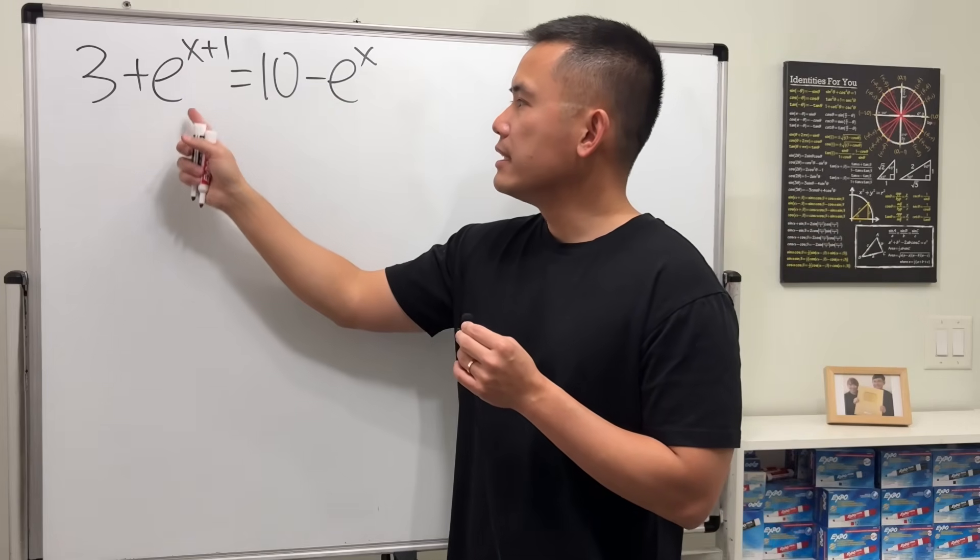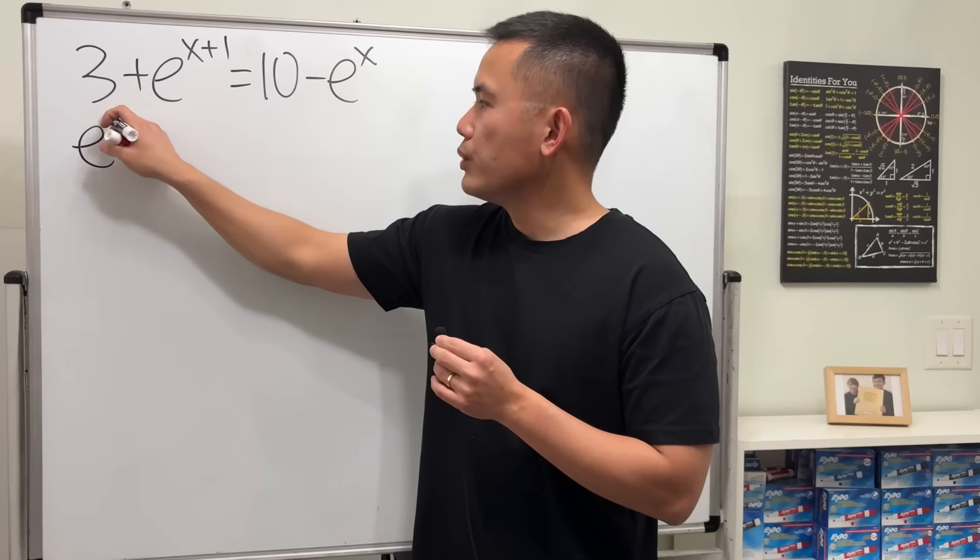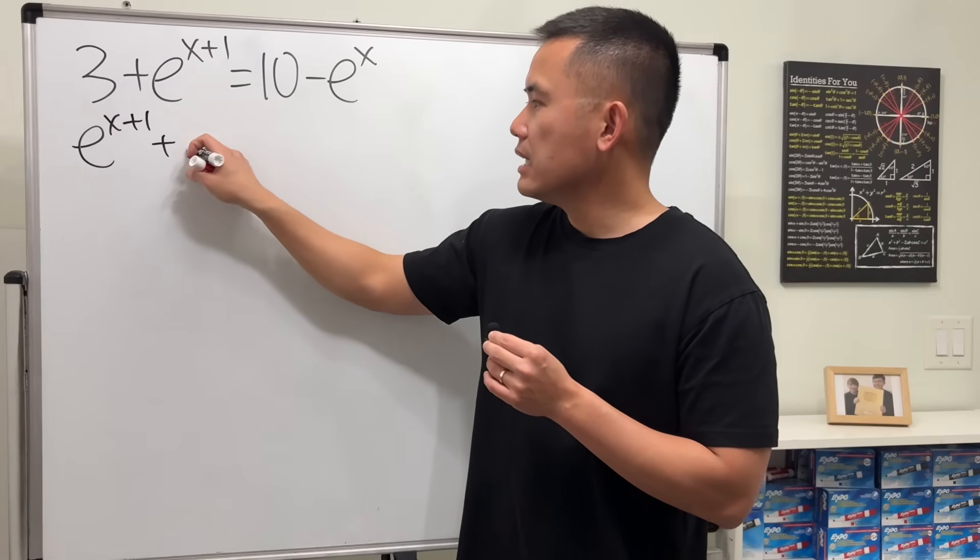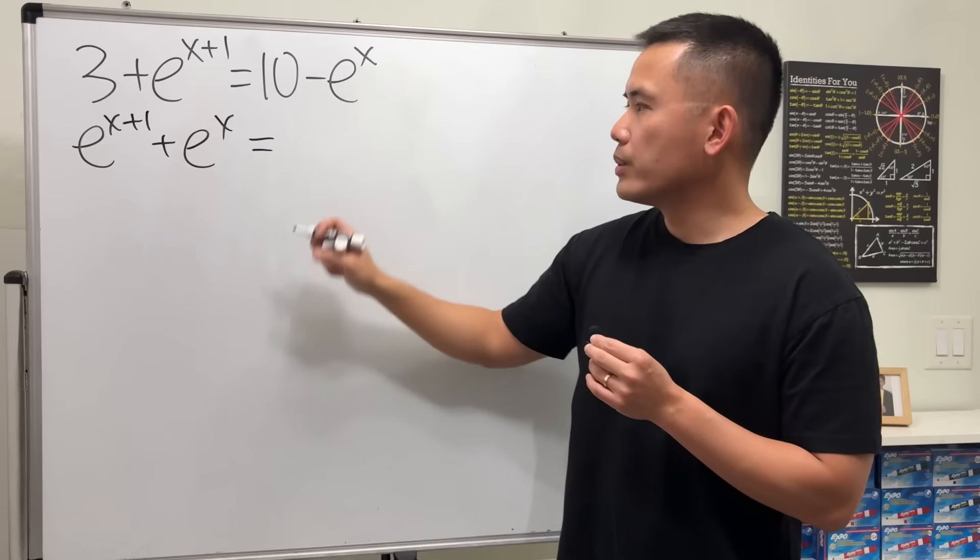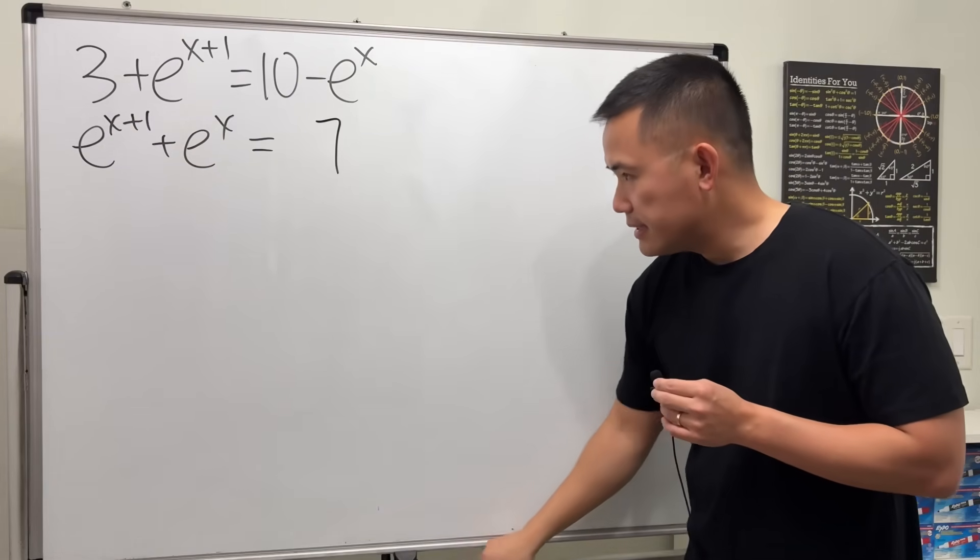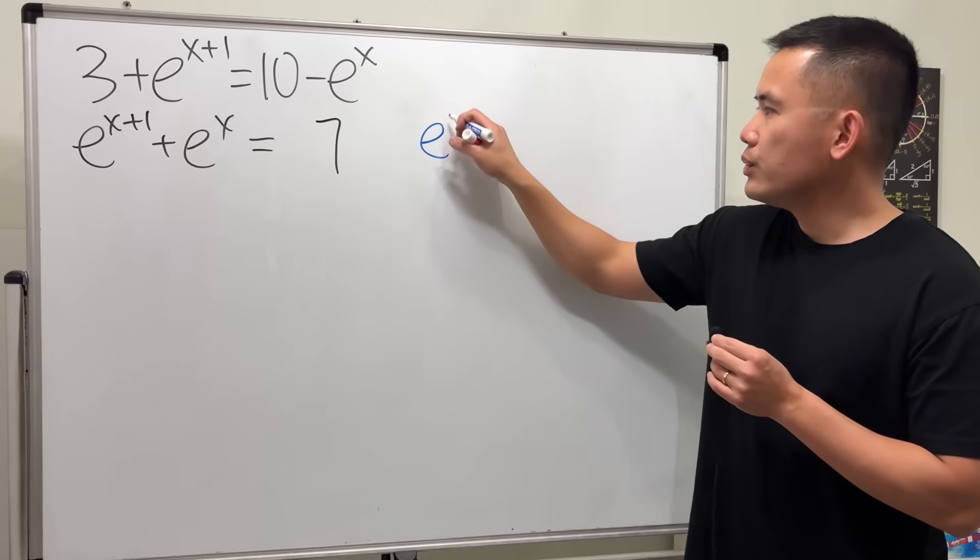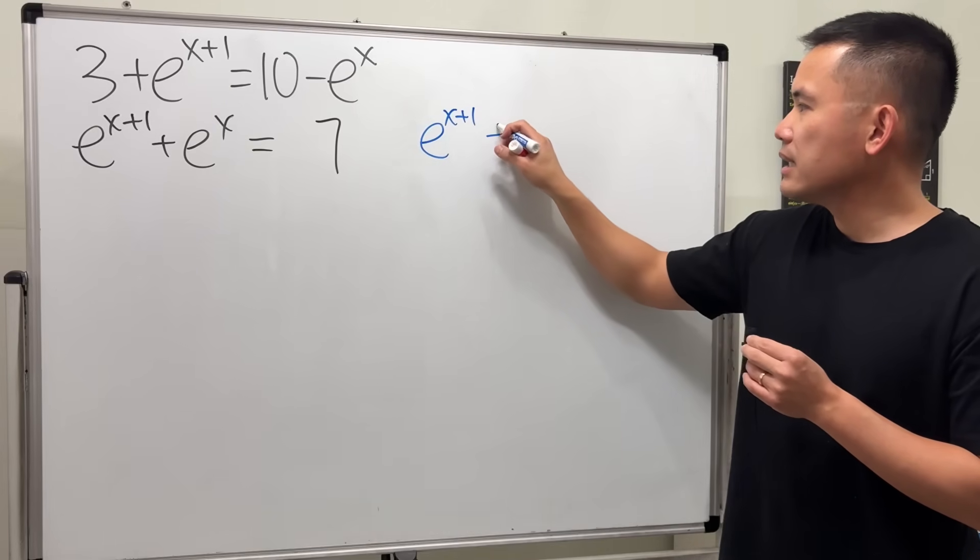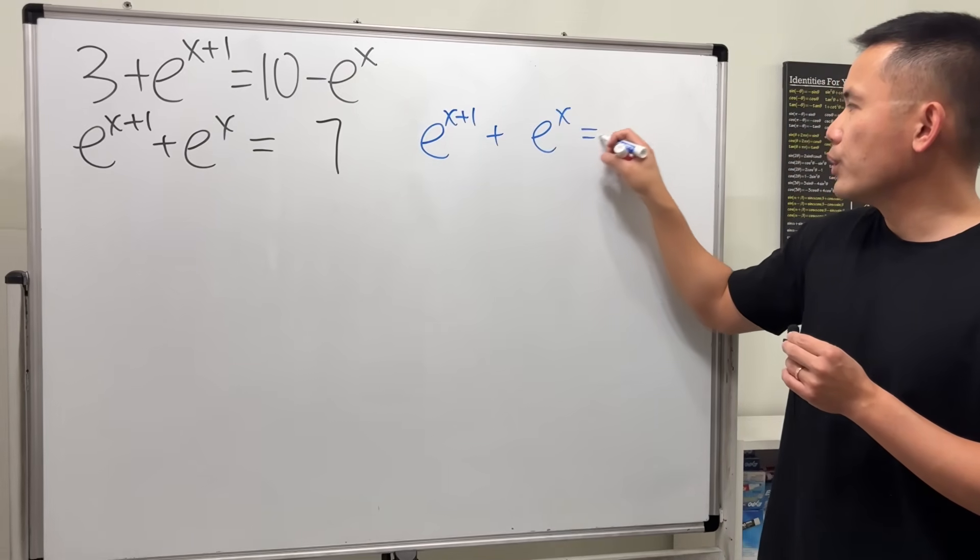Let's go ahead and add e^x to both sides, so we will have e^(x+1) + e^x. That's equal to, subtract 3 from both sides, we'll get 7. Now let me write this down again: we have e^(x+1) + e^x = 7.